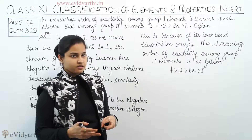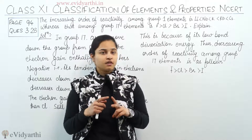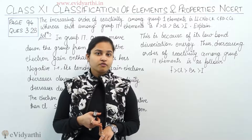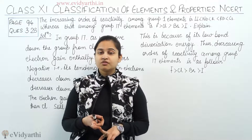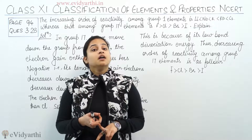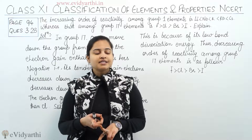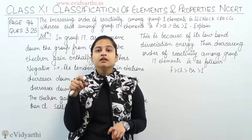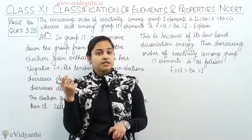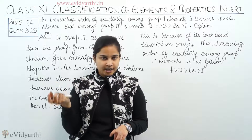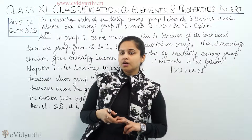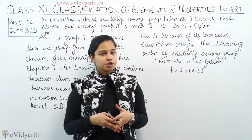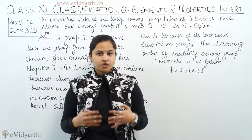So there are two reasons: first, the decreasing electrode potential down the group from fluorine to iodine; and second, the decrease in — that is, the less negative values of — electron gain enthalpy down the group. These are the two reasons to elaborate regarding the reactivity of the halogens when moving down the group.